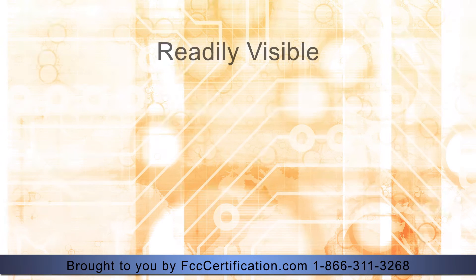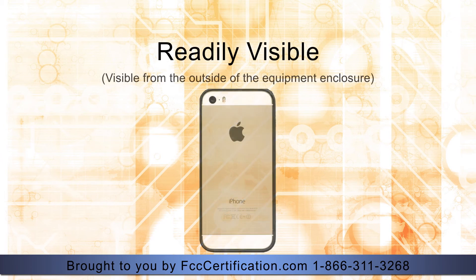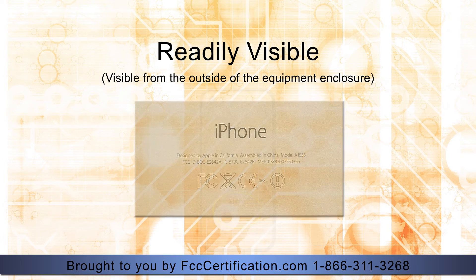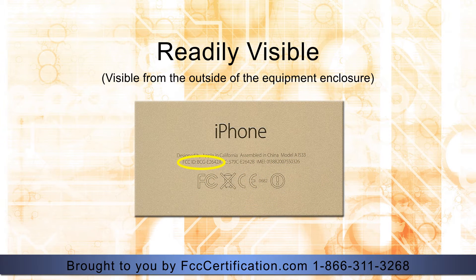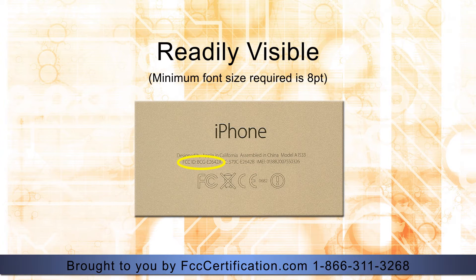The FCC ID shall be readily visible. This means the nameplate or nameplate data must be visible from the outside of the equipment enclosure. While the size of the FCC identifier should be proportionate with the device, the font size for the FCC identifier is not required to be larger than 8-point.